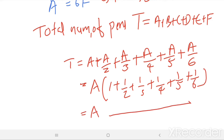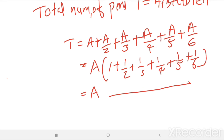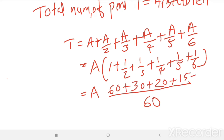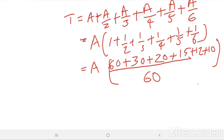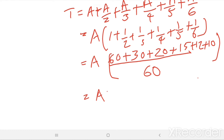Take the LCM, which gives 60. Then: 60 plus 30 plus 20 plus 15 plus 12 plus 10, giving us A times 147 divided by 60.